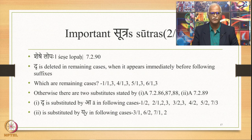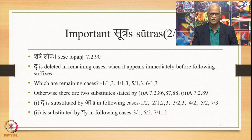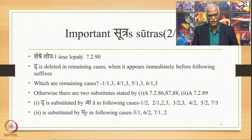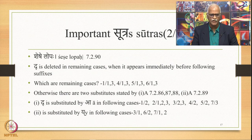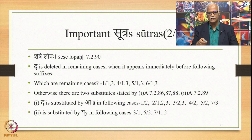Another important Sutra is Sheshelopaha, which states that Tha is deleted in the remaining cases when it appears immediately before the following suffixes. The remaining cases are 1.1 and 1.3, 4.1 and 4.3, 5.1 and 5.3 and 6.1 and 6.3. Otherwise, there are two substitutes stated by rules 7.2.86, 87, 88 and 89. The suffix is substituted by A in the following cases: 1.2, 2.1 and 2.2, 3.2, 1.2 and 3.2, 3.2 and 3.3, 3.4.2, 5.2 and 7.3. Leaving these cases, in the other cases the suffix is deleted by Sheshelopaha.